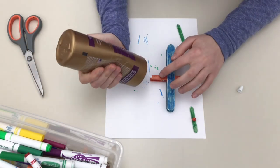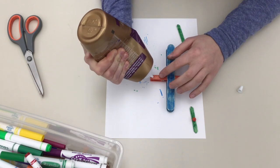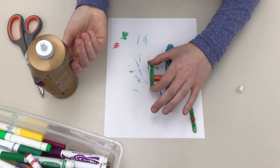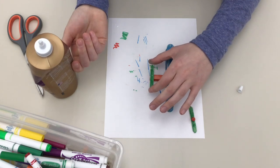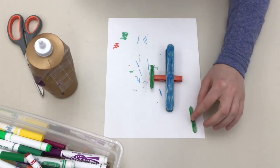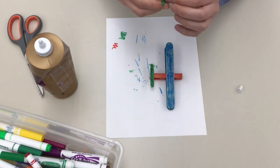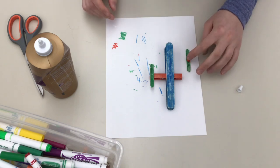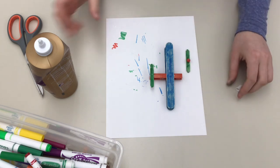Add the tail fin by putting some glue on the end of the clothespin and attaching your other small piece of the craft stick. Now you can leave all these pieces dry for a while and then we'll put them all together later.